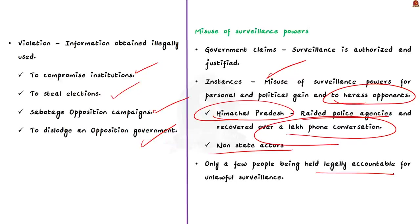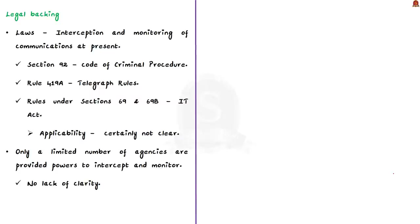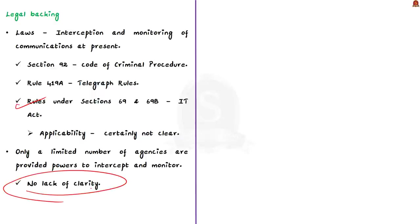This raises the question: whether surveillance of individuals is legally backed in India. According to the author, there is legal backing — for example, Section 92 of the Code of Criminal Procedure, Rule 419A of the Telegraph Rules, and Sections 69 and 69B of the IT Act all authorize interception and monitoring of communications. However, the applicability of these laws is not clear; there is a lot of ambiguity leading to loopholes that can be misused. These rules also allow only a limited number of agencies the powers to intercept and monitor, with no accountability or check and balance.